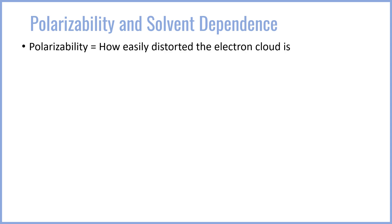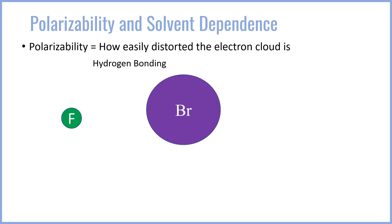The other major factor which influences nucleophilicity is polarizability, and this is much trickier than electronegativity because it is actually dependent on the solvent. Polarizability is defined as how easily distorted the electron cloud is — if an atom is very polarizable, its electron cloud is very easily skewed towards one side or another. Comparing fluorine and bromine: fluorine is much smaller and more tightly holding of its electron cloud, and as a result its polarizability, measured in alpha values, is around six times less than that of bromine.